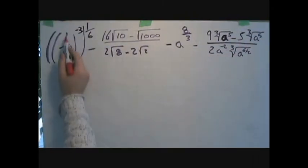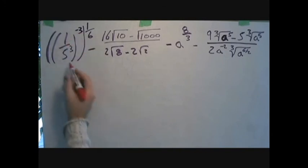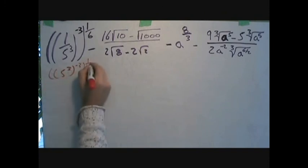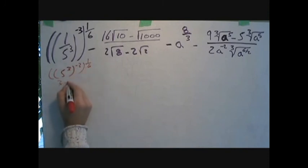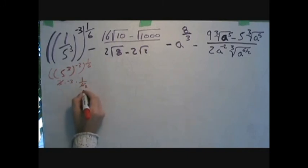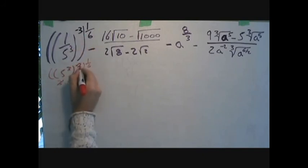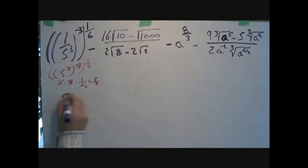Let's start off with this term — the negative power here flips the expression so it goes up. This becomes 5 to the power of 3, to the power of negative 3, to the power of one-sixth. When you have an exponent to an exponent to an exponent, these multiply each other: 3 times negative 3 times one-sixth. The 3 reduces the 6 down to 2, so this becomes 5 to the power of three-halves.